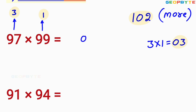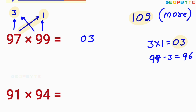You first write that 03 here. Then you write 99 minus 3, or 97 minus 1. 99 minus 3 is 96. Similarly, 97 minus 1 is also equal to 96. You write this 96 before the 03. You got your answer. It means 97 into 99 is equal to 9603. 9603 is the value of 97 into 99.